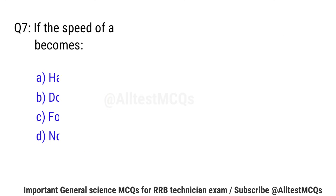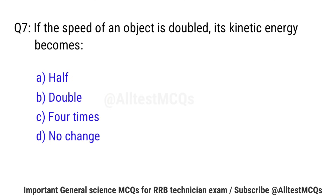Question No. 7: If the speed of an object is doubled, its kinetic energy becomes? Right option is C: Four times.